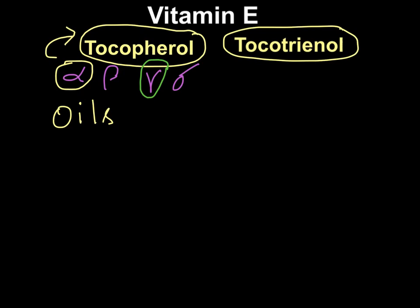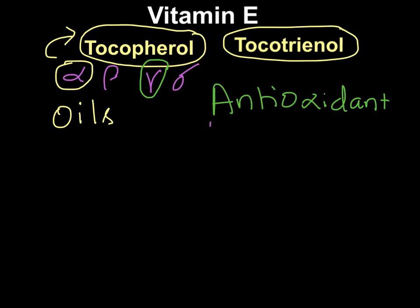One of the most important functions of vitamin E in our body is acting as an antioxidant. Alpha tocopherol neutralizes reactive oxygen species, whereas gamma tocopherol neutralizes reactive nitrogen species. So overall, whether it is alpha tocopherol or gamma tocopherol, they both act as antioxidants in our body.